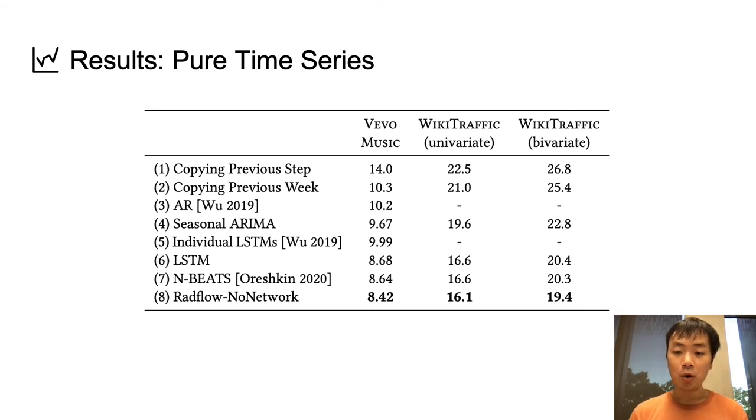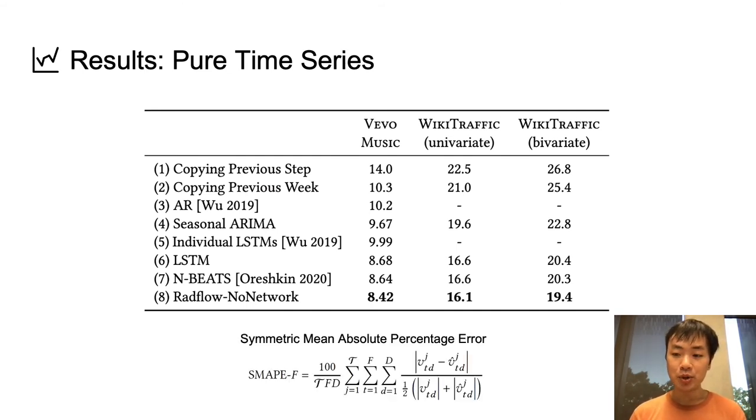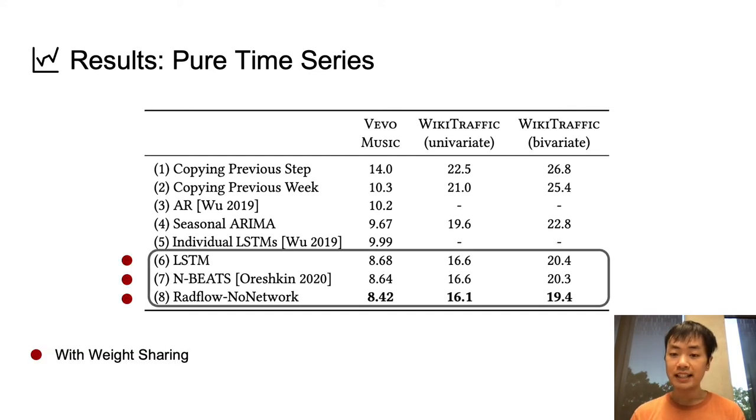Let's now have a look at the results. All of the results here are reported using a metric called SMAP, Symmetric Mean Absolute Percentage Error. This metric is bounded between 0 and 200, and a lower number is better. The first observation is that models where we share the same weights across all time series perform better than models that use a different set of parameters for each time series. This captures the intuition that weight sharing allows us to learn common patterns across multiple time series.